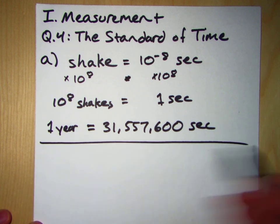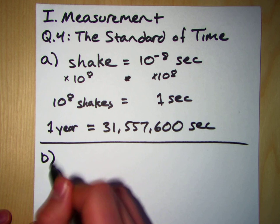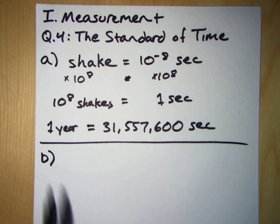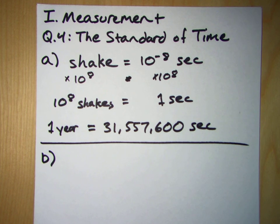All right, part B. This one's kind of fun. Humans have existed for about 10 to the 6th years, whereas the universe is about 10 to the 10th years old. If the age of the universe is taken to be one day, for how many seconds have humans existed?